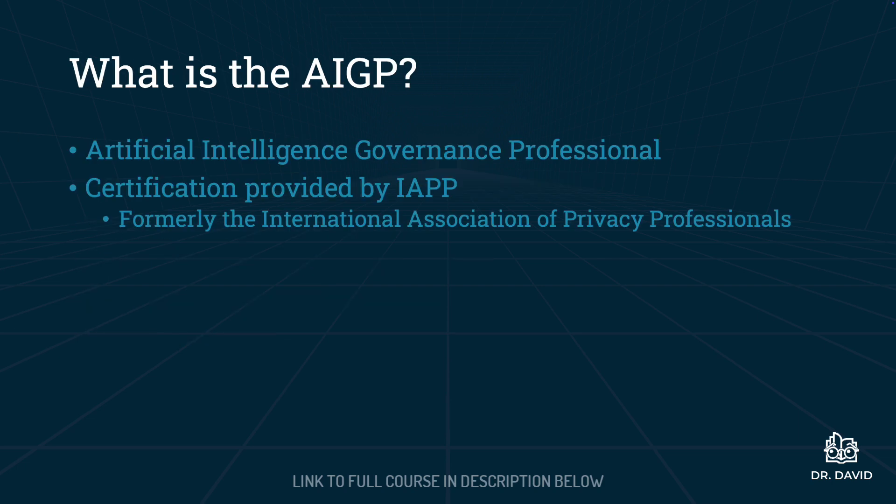AIGP is an acronym that stands for Artificial Intelligence Governance Professional. This certification is provided by IAPP — formerly an acronym for the International Association of Privacy Professionals. Part of the rebrand coincides with an expansion of IAPP's mission. Previously their scope was narrowly focused on privacy; now IAPP focuses on privacy, AI governance, and digital responsibility.